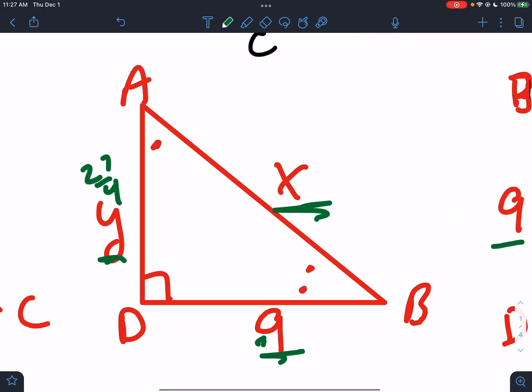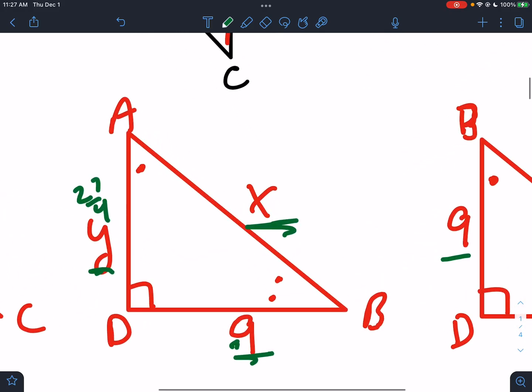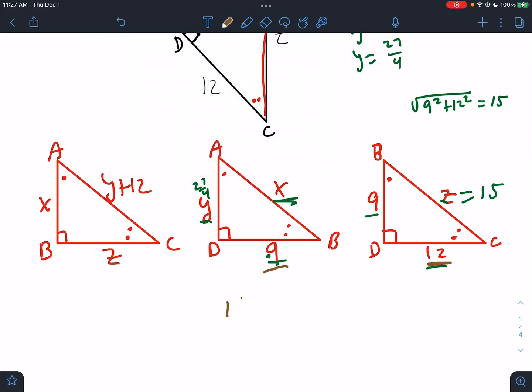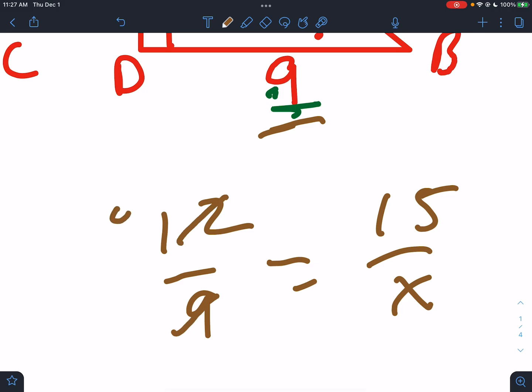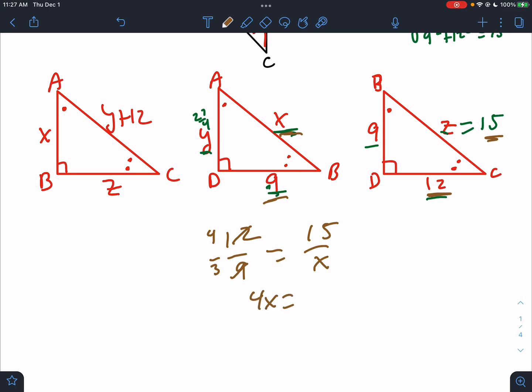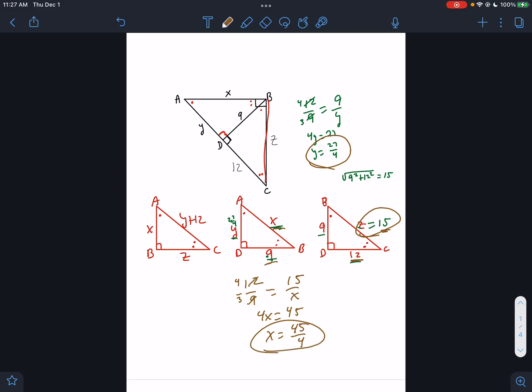We could do Pythagorean theorem here as well for 27 fourths and nine. But that might be a little bit too wonky. I think proportions will be easier. So I'm going to set up a proportion. 12 over nine equals 15 over X. I'm going to reduce 12 and nine again. That's four thirds. And then that's all we got. So 4X equals 45. So X equals 45 over 4. We got X. We got Z. We got Y. We're done. Boom. We can do that.